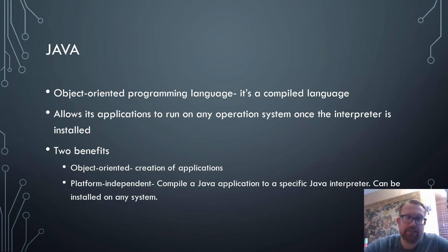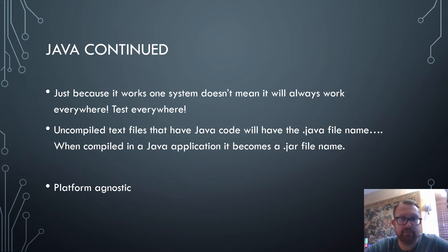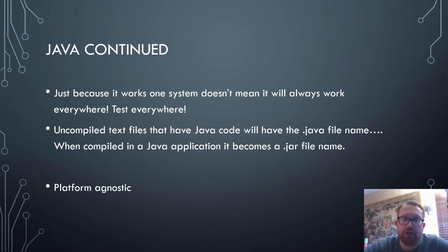Java is an object-oriented, compiled programming language that allows applications to run on any operating system once the interpreter is installed. It is object-oriented so it can create applications, and it's platform-independent. If you compile a Java application to a specific Java interpreter, it can be installed on any system. Uncompiled text files with Java code have a .java file name extension, while a compiled Java application becomes a .jar file. It's platform-agnostic, meaning you can use it wherever you need to.